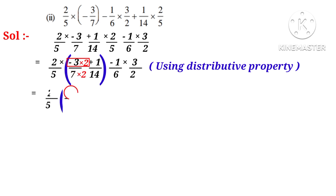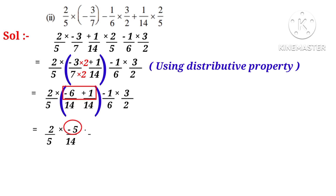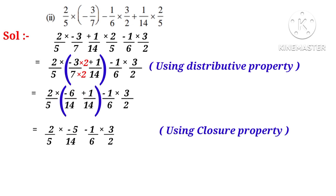Then we get minus 3 into 2 is minus 6, and 7 into 2 is 14. Now these fractions are converted into like fractions so we can easily add or subtract. Observe that minus 6 plus 1 is minus 5. Using closure property, we can simplify. On simplification by 5, by 2, and by 3, we get minus 1 by 7 and minus 1 by 4.